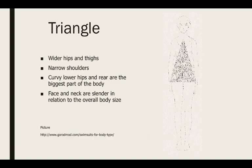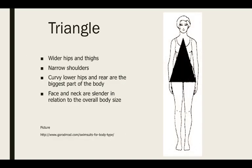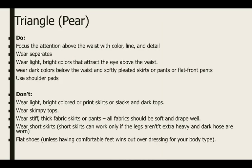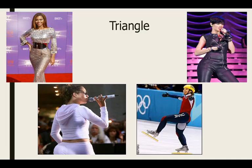Anyway, if you're triangular, you're going to have wider hips and thighs. You're going to have narrow shoulders. Curvy lower hips and rear are going to be your biggest part of your body. Your face and your neck are going to seem very slender in relation to the rest of your body. So, again, you can go through this if you'd like. But there's a lot of people who are considered to be triangular or pear-shaped.